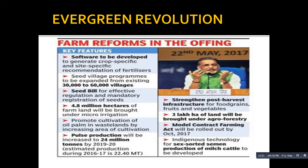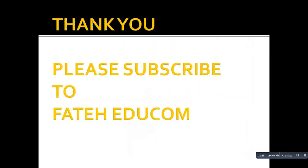Indigenous technology for sex-sorted semen production of milk cattle is also to be developed. Overall, the Evergreen Revolution covers animal husbandry, horticulture, the farming sector, and non-farming sectors - including oil seed and pulse promotion. Its main goal is to double farmers' income by 2022. These concepts and facts are very important for competitive examinations. That's all from Evergreen Revolution - hope this video benefits you. Please subscribe to Fateh Adukam for further updates. Thank you.